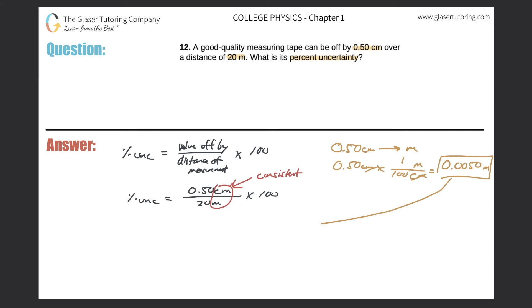Now this is the number we can use in our calculations. So I'll write it here, 0.0050 meters. And let me set up the rest of the uncertainty calculation, right? This was over the 20 meters, multiplied by 100, percent uncertainty.